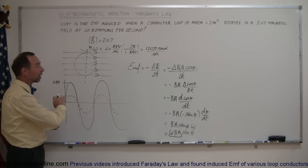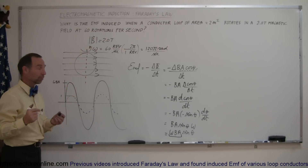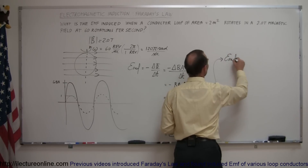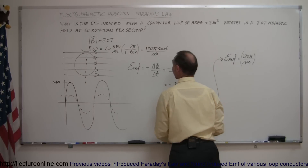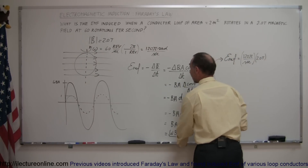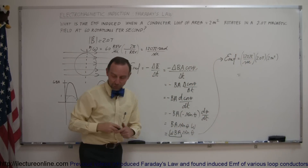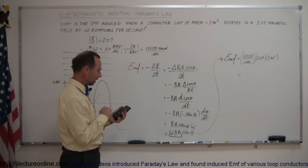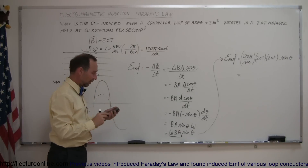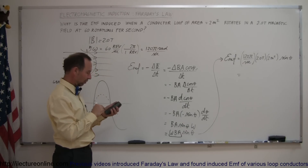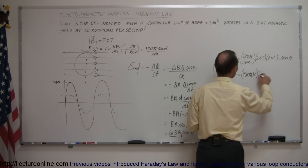So the EMF will be positive one moment, negative the next, positive, then negative, as the loop rotates. Plugging in numbers, the EMF induced equals omega (120π radians per second) times the B field (2.0 teslas) times the area (2 square meters), giving us 120π × 4 = 1,508 volts. So the induced EMF is 1,508 × sinθ volts, ranging from positive 1,508 V to zero to minus 1,508 V and back.